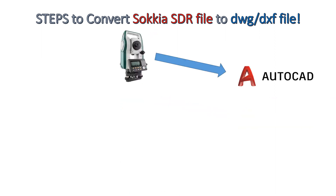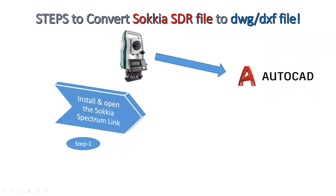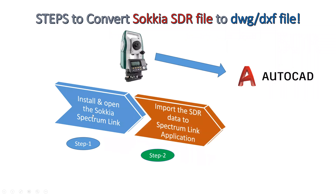First, what we need to do is install a software called Sokkia Spectrum Link. Once the installation is done and we open the Spectrum Link app, we import the SDR data — that means total station observation data exported as SDR from the Sokkia machine. We import this SDR data into Spectrum Link.